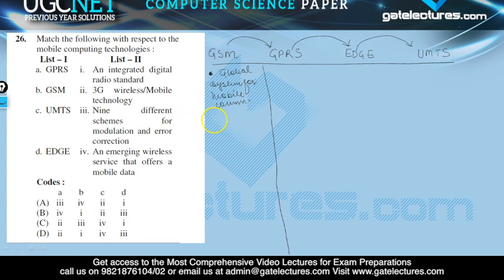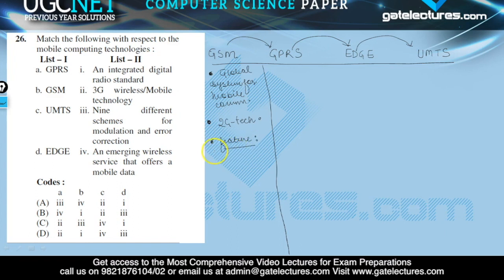GSM was launched in the early 90s and is the standard agent of 2G technology. GSM provides many features, and one of the most popular features provided by GSM is SMS, or text messages.